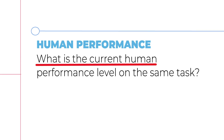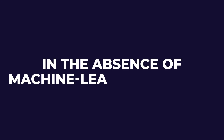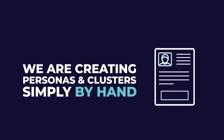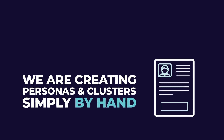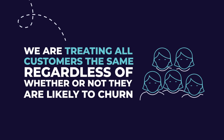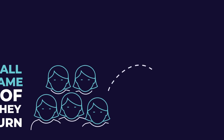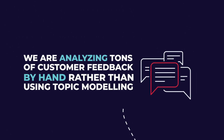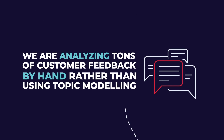The next one is really interesting: what is the current human performance on this task? Thanks to this, we'll later be able to measure the money, time, and performance impact of actually using a model. Some examples: in the absence of machine learning models, we are creating personas and clusters simply by hand. Or we are treating all customers the same regardless of whether they are likely to churn. Or we are analyzing tons of customer feedback by hand rather than using topic modeling. Here you really want to set the current human benchmark.